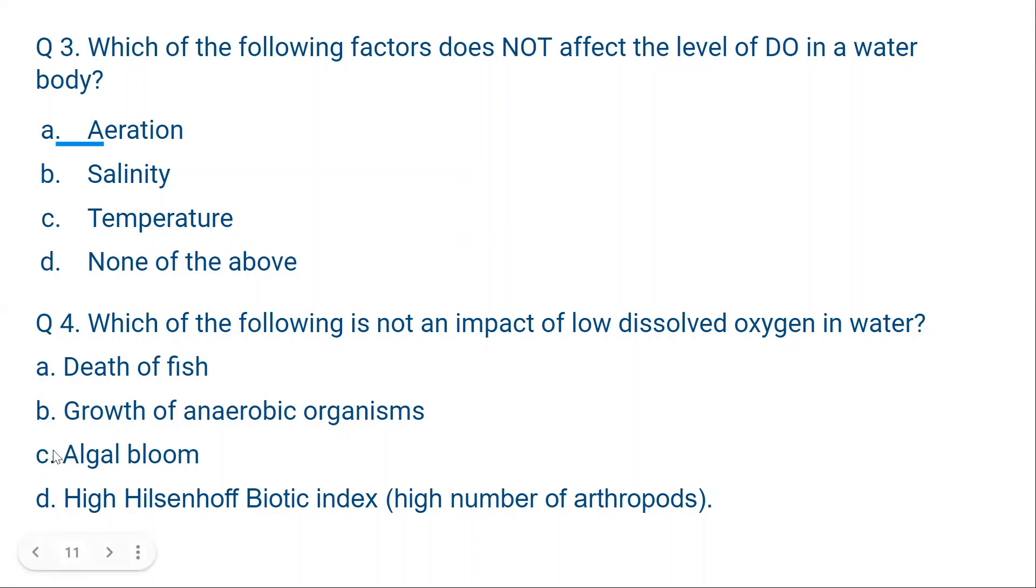I have specifically made a question about this so that you know the difference. That if algal bloom happens, because of algal blooms, the water supply is cut from air. But if there is already low DO, then algal bloom is not promoted.